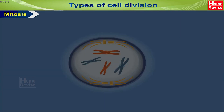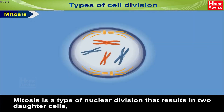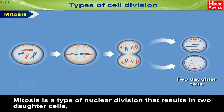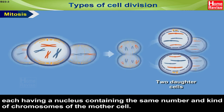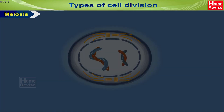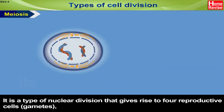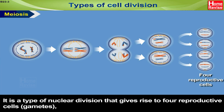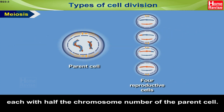Mitosis is a type of nuclear division that results in two daughter cells, each having a nucleus containing the same number and kind of chromosomes as the mother cell. Meiosis is a type of nuclear division that gives rise to four reproductive cells, called gametes, each with half the chromosome number of the parent cell.